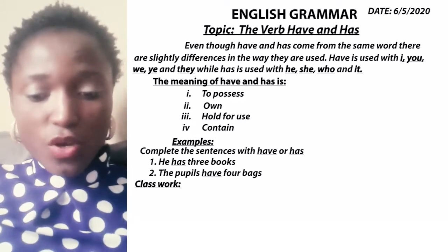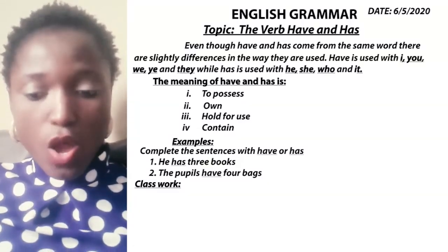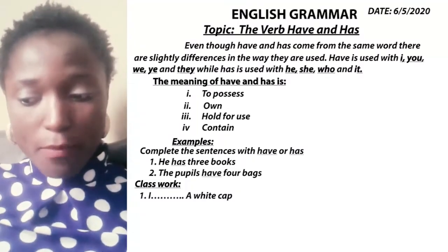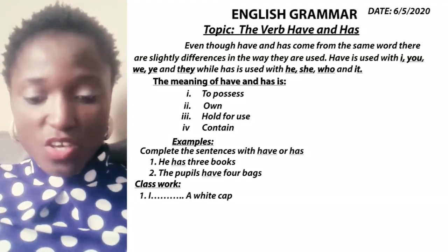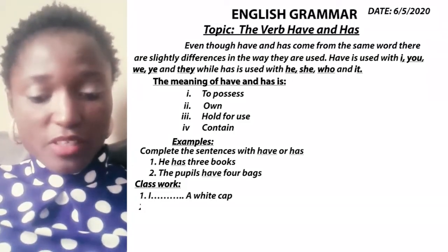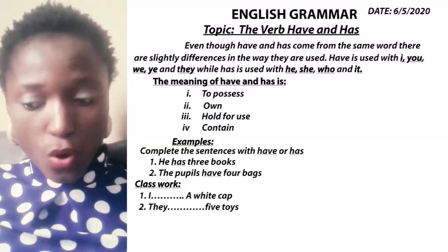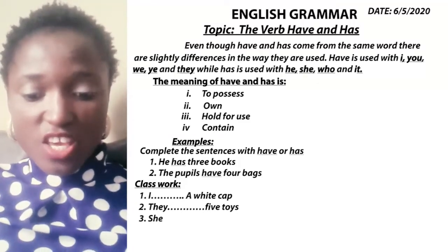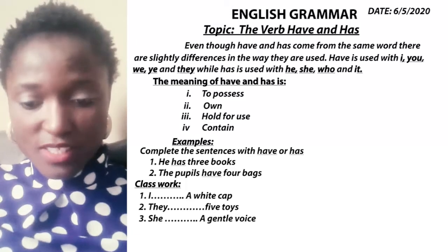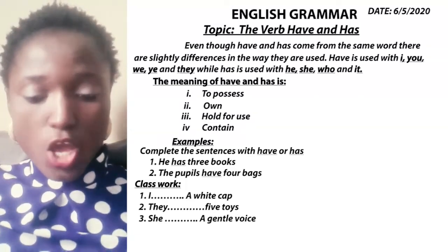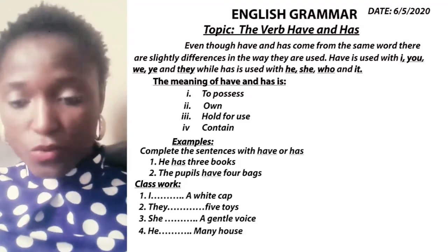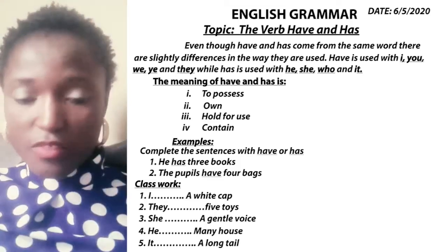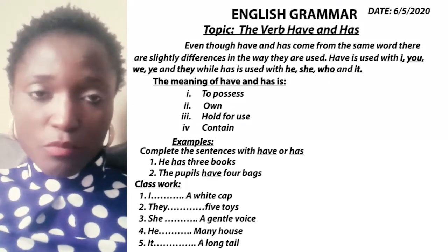You have to fill in the gap with either have or has. Number one: I ___ a white cap. Number two: they ___ five toys. Number three: she ___ a gentle voice. Number four: he ___ many houses. Number five: he ___ a long tail. Thank you and God bless you. Submit to me privately.